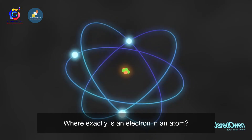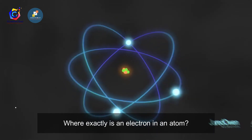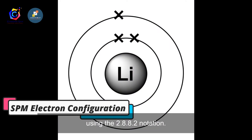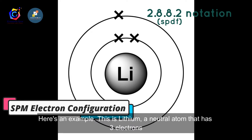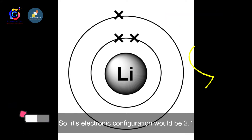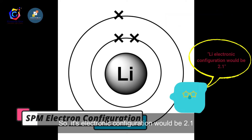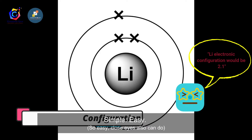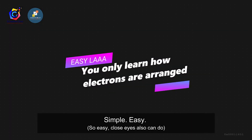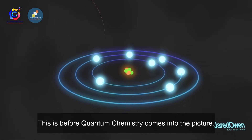Where exactly is an electron in an atom? Let's recall — during SPM we learned about electron arrangement using the 2-8-8-2 notation. Here's an example: lithium, a neutral atom that has three electrons, so its electronic configuration would be 2.1. Simple and easy.